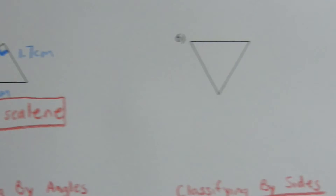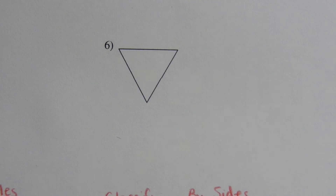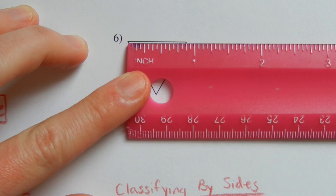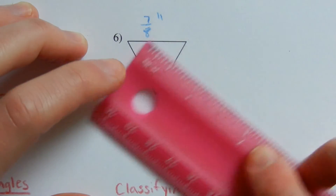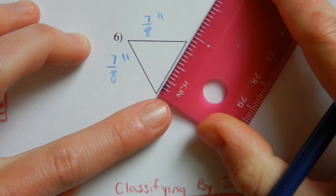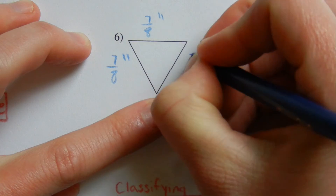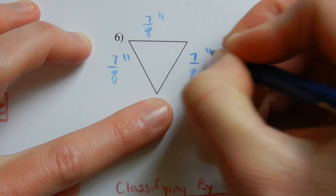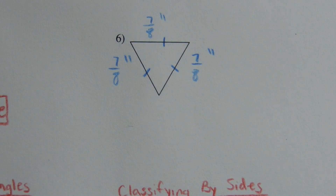Lastly, number six. Measuring in inches, this first side is approximately seven-eighths of an inch, this next side is also seven-eighths, and this last side is seven-eighths as well. Since all sides are of equal length, this is an equilateral triangle.